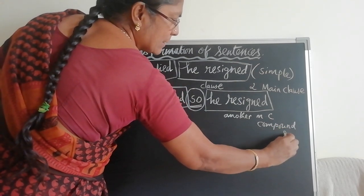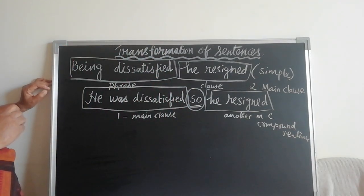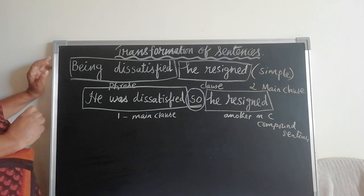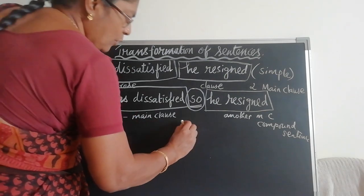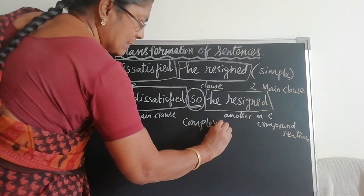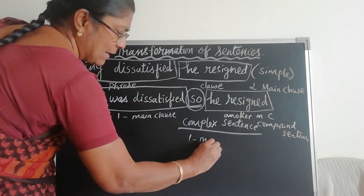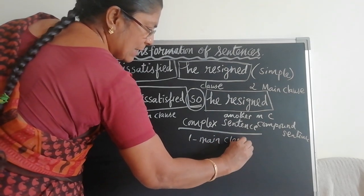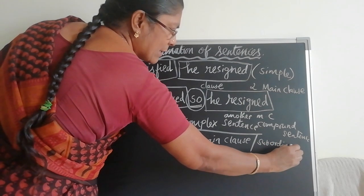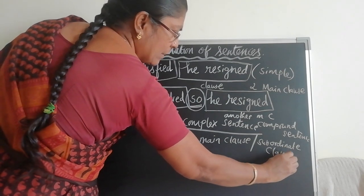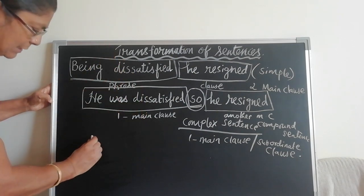We have to change the sentence into a complex sentence. What is the structure for a complex sentence? One subordinate clause with one main clause, or one main clause with one subordinate clause. A complex sentence needs one main clause and one or more subordinate clauses.